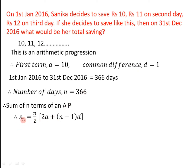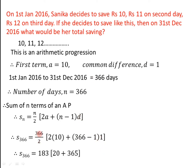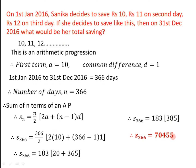We substitute these values: N is 366, so S366 = 366/2 × (2×10 + (366−1)×1). That gives us 183 × (20 + 365×1), which is 183 × (20 + 365) = 183 × 385 = 70,455.